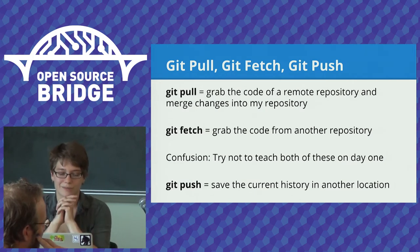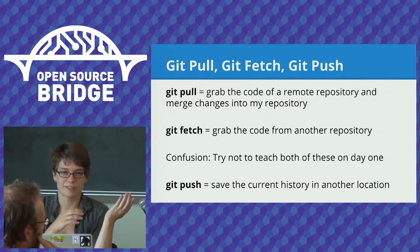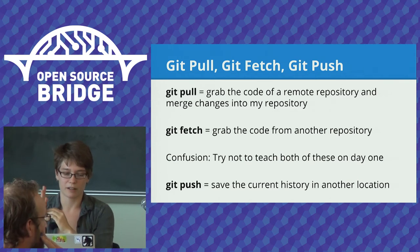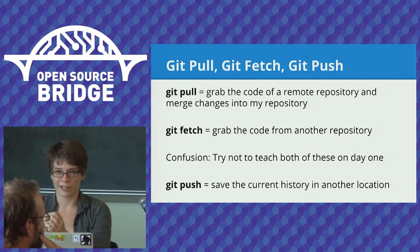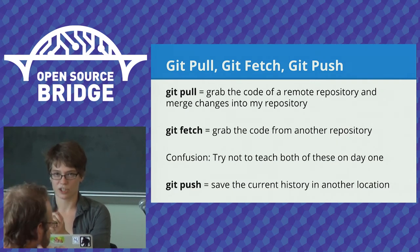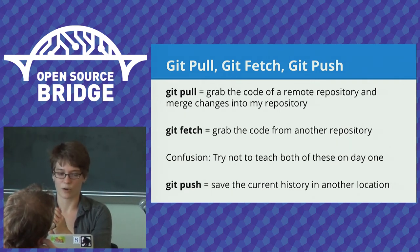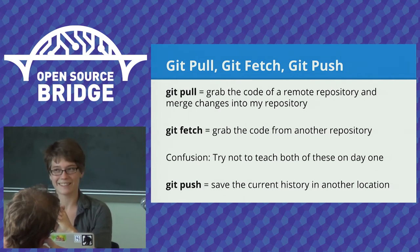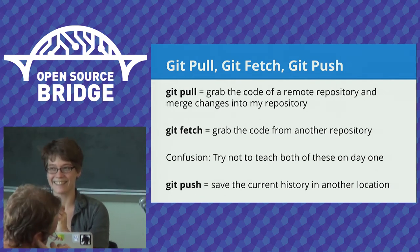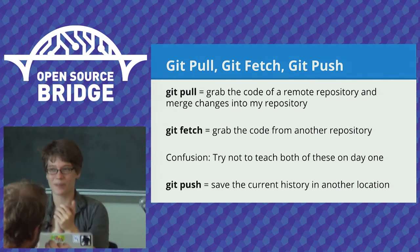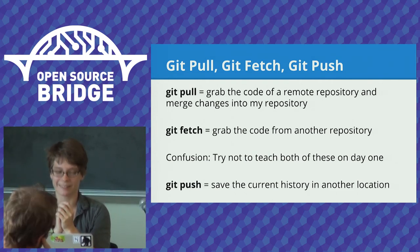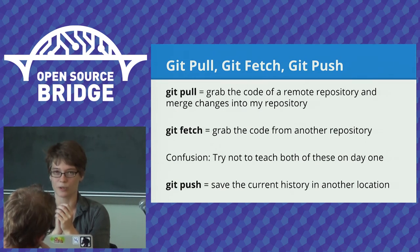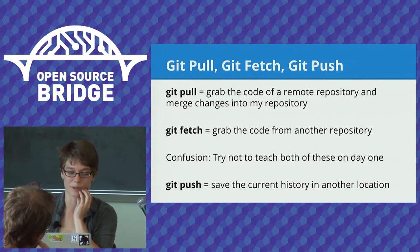Describing the difference between pull and fetch when you haven't talked about branching can be pretty confusing. So if you haven't already talked about branching, maybe just teach them one. Then by the time you get to branching you'll have time to teach the other one. Otherwise they're going to spend a lot of time thinking 'which one do I want here?' — when it probably doesn't matter much if they're not doing much branching yet.